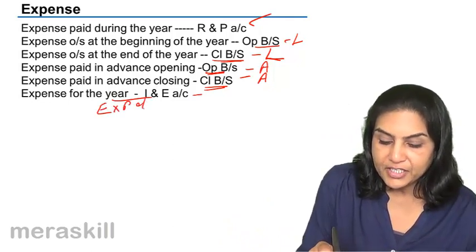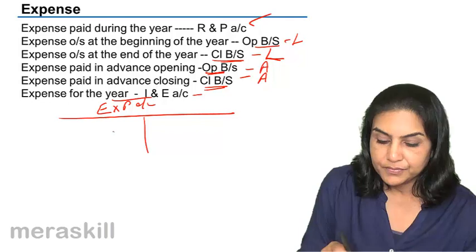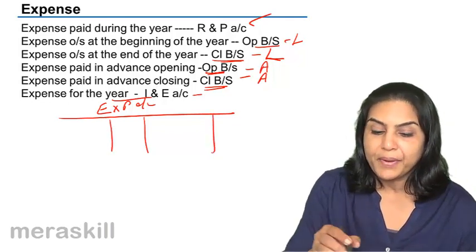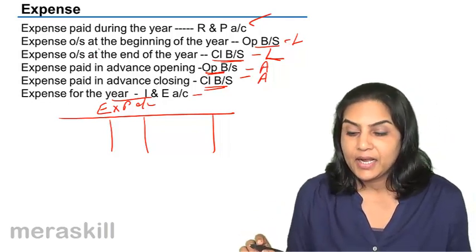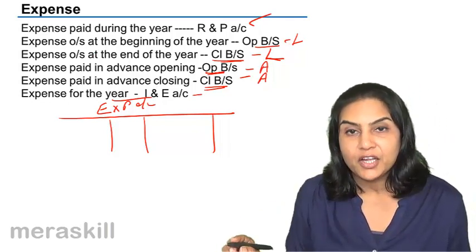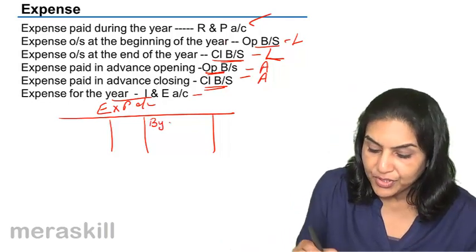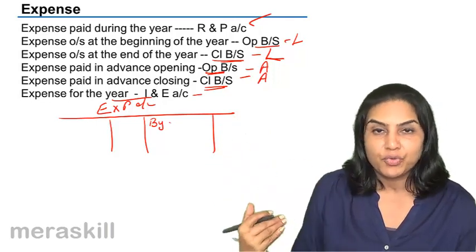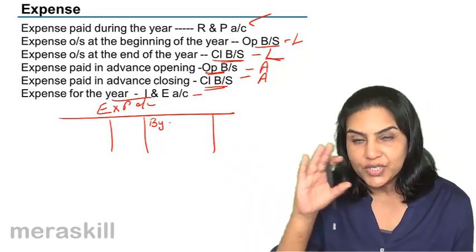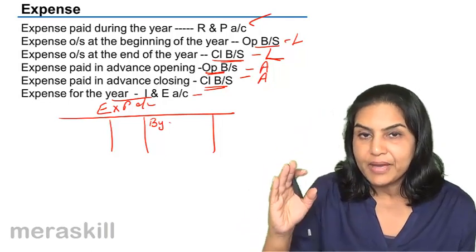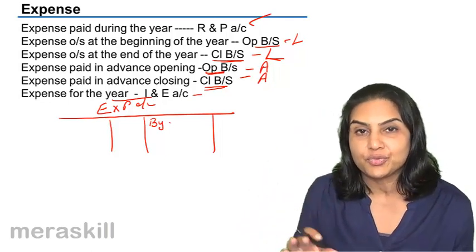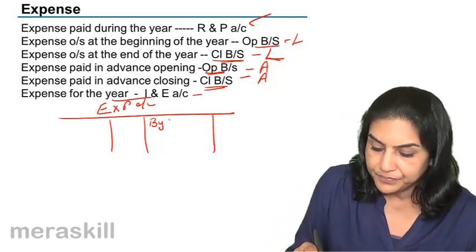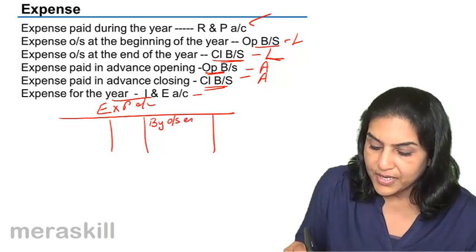If we were to prepare an expense account, what is the opening balance? We have a liability — outstanding expense at the beginning of the year. We bring down the liability to the credit side, because the liability account is debited and this revenue account would be credited. We are closing the liability account that was in the opening balance sheet by transferring it to the revenue account, whether it is income or expense — by outstanding expense.